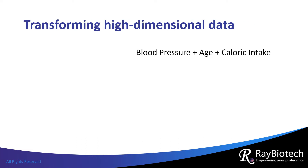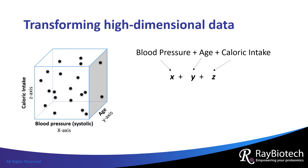Let's imagine that we want to know whether a person's blood pressure, age, and/or daily caloric intake affects whether they will get diabetes. We collect these data from 20 patients. The unique combination of data points from each patient is represented as a black dot. The location of this dot can be described in a three-dimensional space defined by an XYZ coordinate, where the X-axis represents blood pressure, the Y-axis represents age, and the Z-axis represents caloric intake.